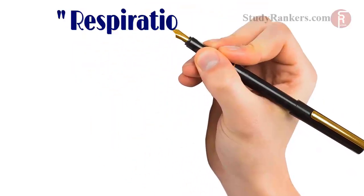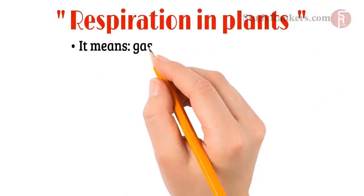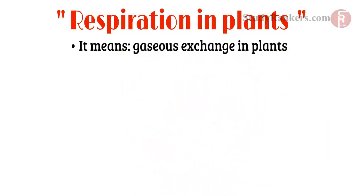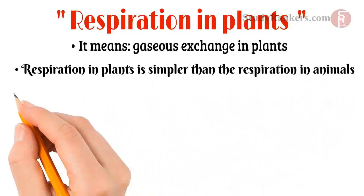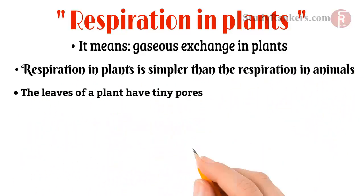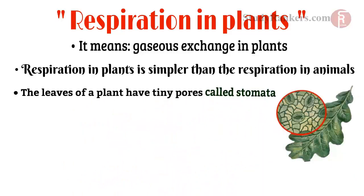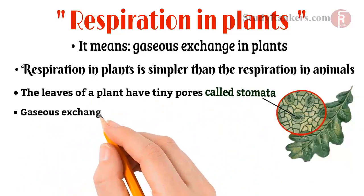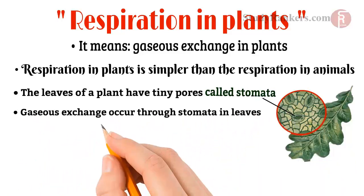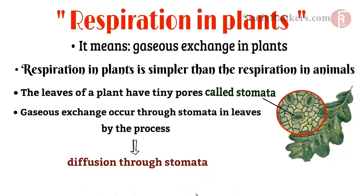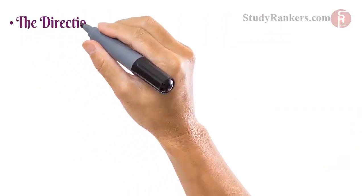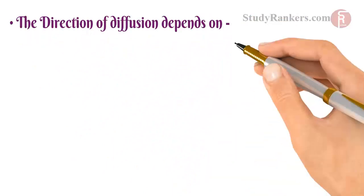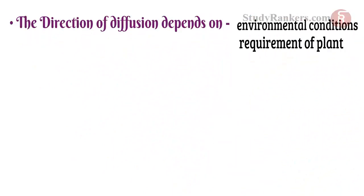Let's study about respiration in plants. It means gaseous exchange in plants. Respiration in plants is simpler than respiration in animals. The leaves of a plant have tiny pores called stomata. Gaseous exchange occurs through stomata in leaves by the process of diffusion. Carbon dioxide and oxygen are exchanged by diffusion. The direction of diffusion depends upon the environmental conditions and the requirements of the plant.